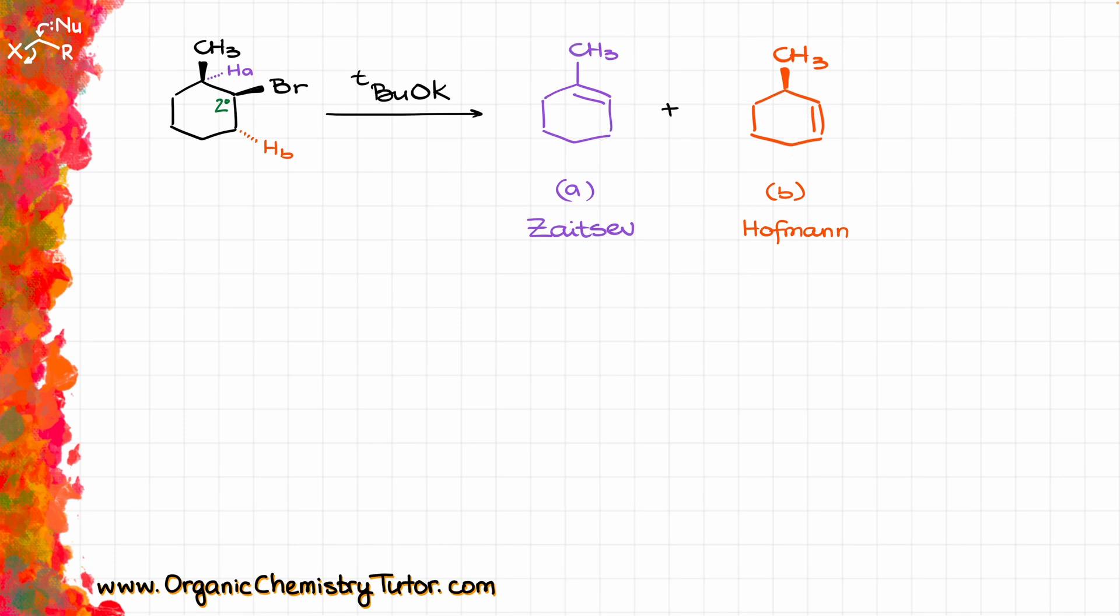And if I were to ask you for the major product here, you would look at the bulky base and you would say that the most likely major product here is going to be the Hoffman product, because that gives us the less substituted double bond due to the less steric hindrances around the hydrogen B over here, so that one is physically easier to grab, so end of story, Hoffman is our major product here. Then we do the experiment, and to our greatest surprise, the major product that we have here is actually product A, the Zaitsev product, the more substituted double bond, even though we are using the bulkier base. So what's going on here? So is everything that we've been teaching you a one giant lie, or is there something missing? Are we not noticing something?